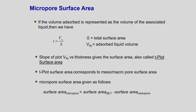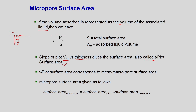If the volume adsorbed is represented as the volume of the associated liquid — assuming all nitrogen molecules in the gas phase are representing liquid — then the thickness is given by the ratio of liquid volume to the monolayer. The slope of the volume versus thickness plot will directly give you the surface area, also called the t-plot surface area, because it is related by this expression.